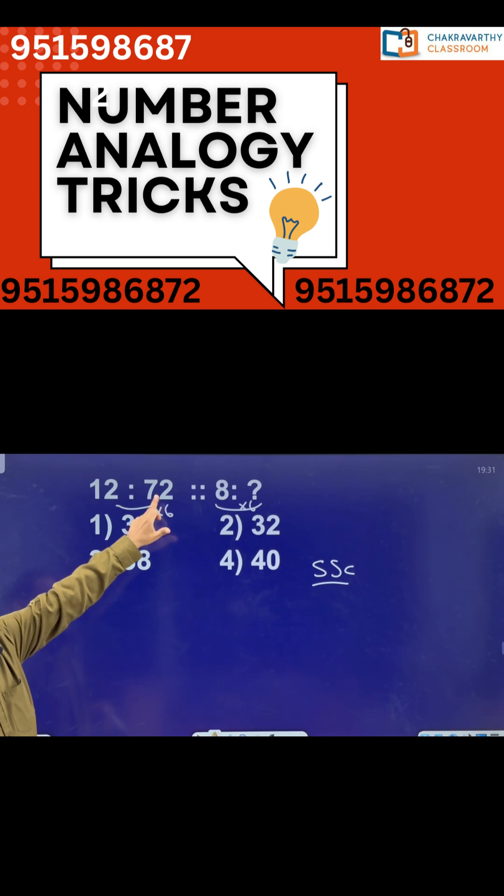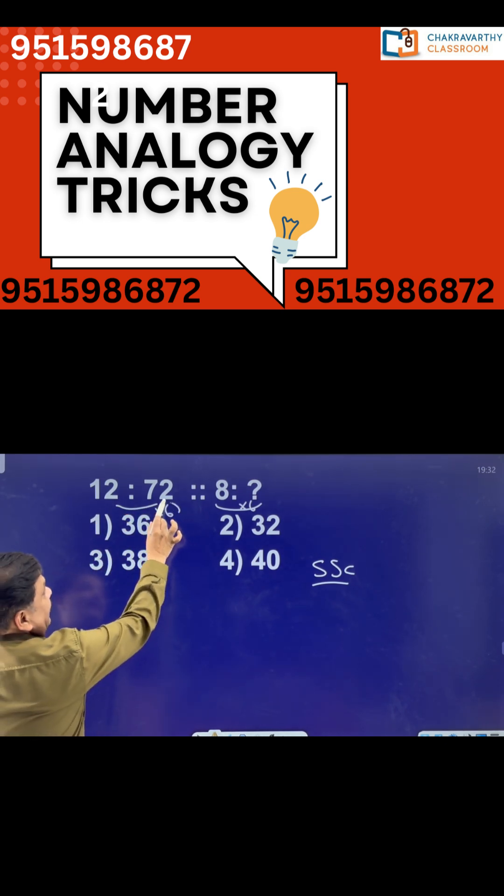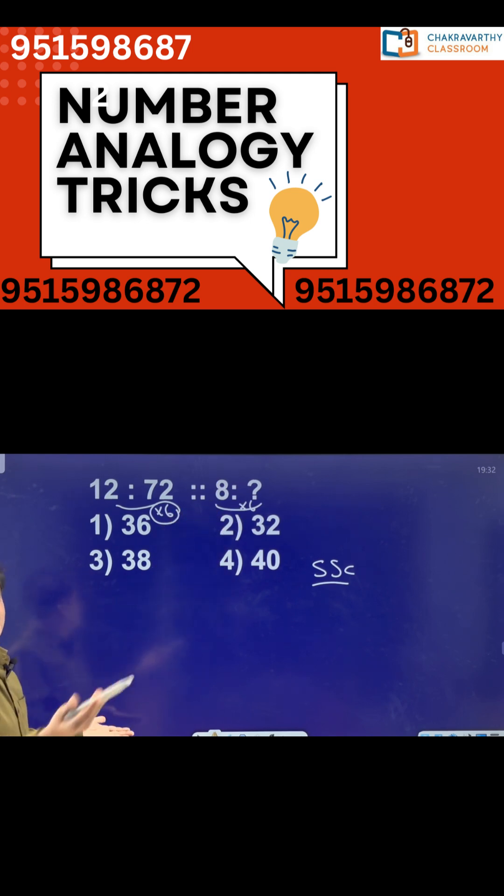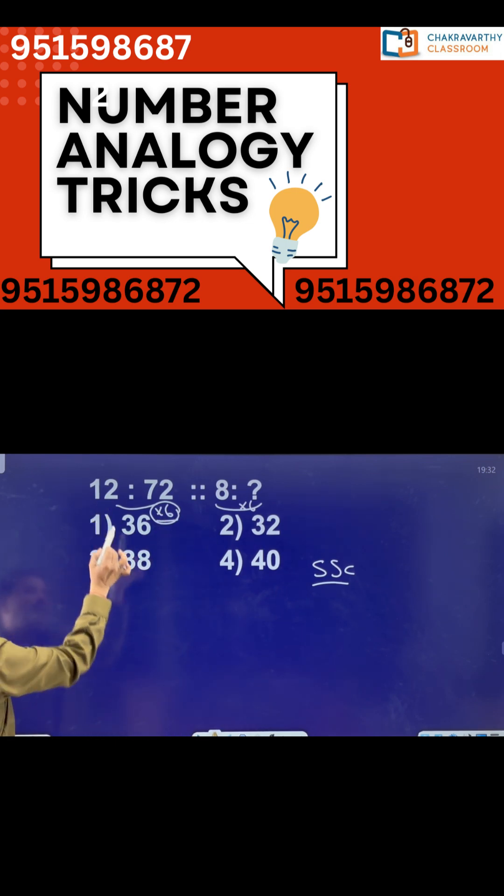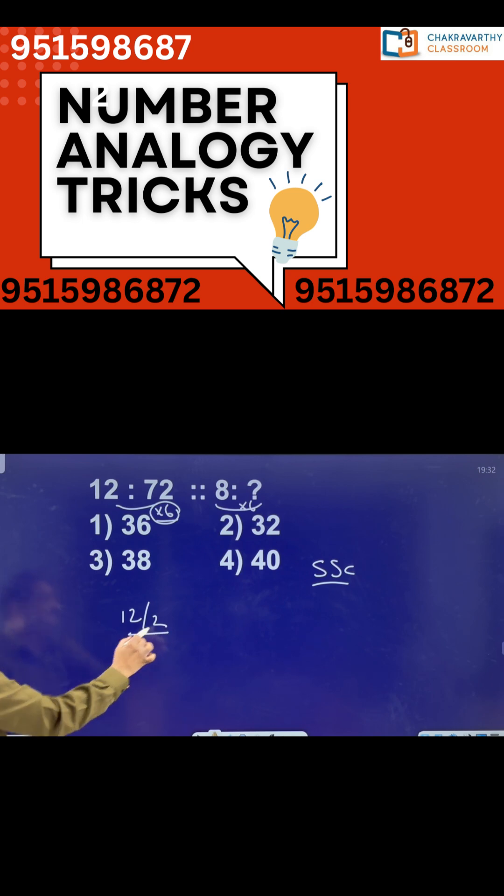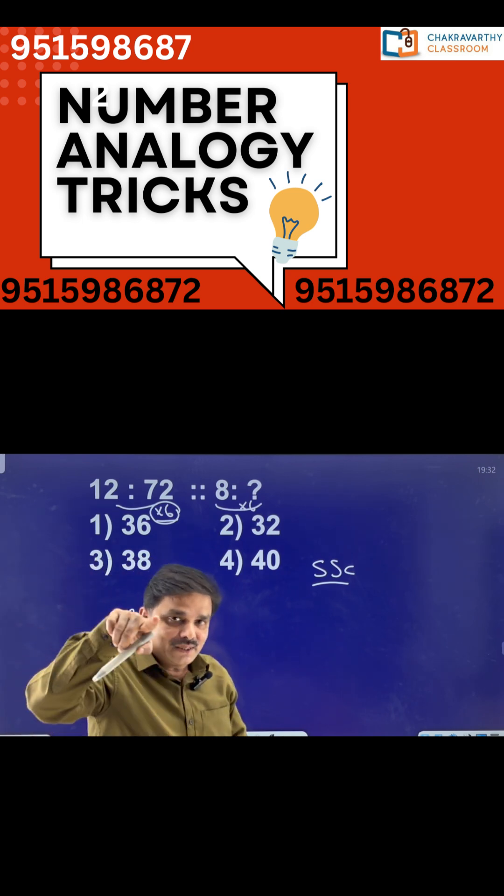So here 12 into 6 is 72, yes of course that is true, but how did I get this 6? Because directly into 6 I'm not getting the answer. If you go for this one, how did I get the 6? Think carefully. 6 is nothing but 12 divided by 2, isn't it? 12 divided by 2 is 6.